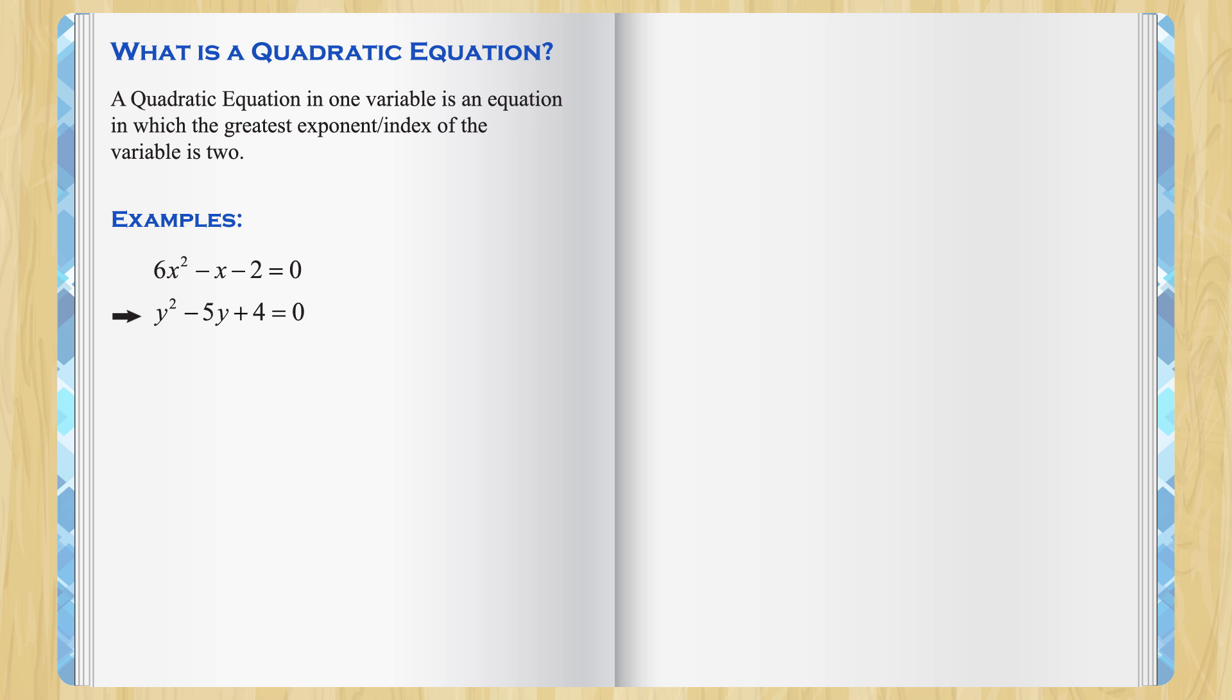You probably have already seen a pattern here. Number times variable squared plus or minus number times the same variable plus or minus number equal to 0. Mathematicians call this pattern the general form which is formally written as ax square plus bx plus c equal to 0.